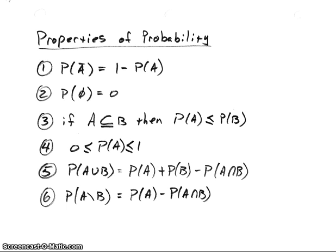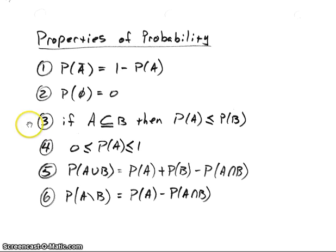Some derived properties from those axioms are as follows. First, the probability of A complement equals one minus the probability of A. Second, the probability of the null set is equal to zero. Third, if A is a subset of B, then the probability of A will always be less than or equal to the probability of B. Fourth, the probability of A will always be between zero and one, which derives from the axioms stating probability is at least zero and the universal set has probability one, so any other event falls between those bounds.